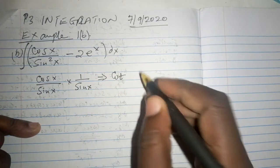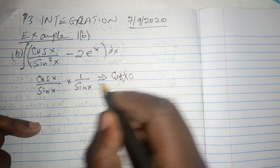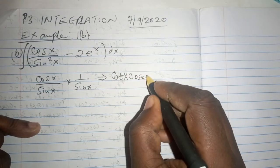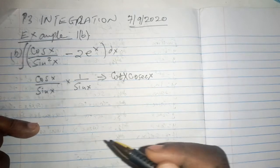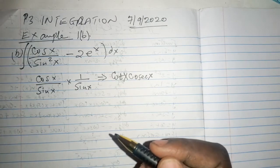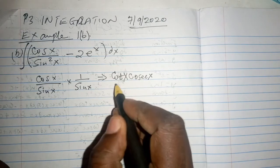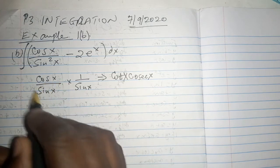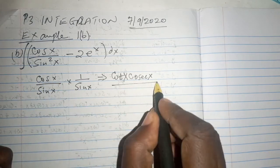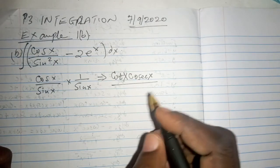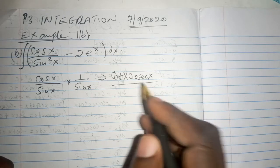The cosine of x over sine of x that one by itself is the cot of x, and 1 over sine x is of course the cosec of x. So that part we have been able to express to dismantle this part and it is expressed that way.